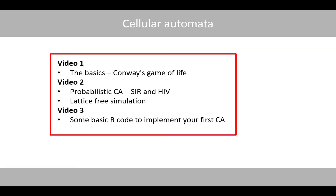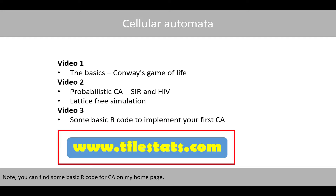This lecture is divided into three videos. In the first video we'll discuss the basics of cellular automata and have a look at the Game of Life model. In the second video we'll learn about probabilistic cellular automata that can be used to simulate the spread of a disease, where you'll also have a look at lattice-free simulations. In the last video I'll show you some basic R-code so that you can implement your first cellular automata. Note that you can find some basic R-code for cellular automata on my homepage.